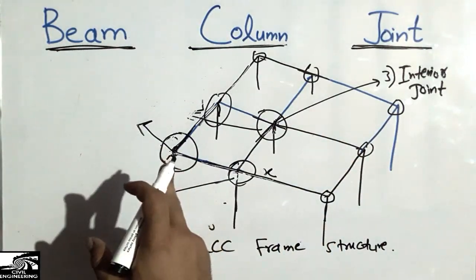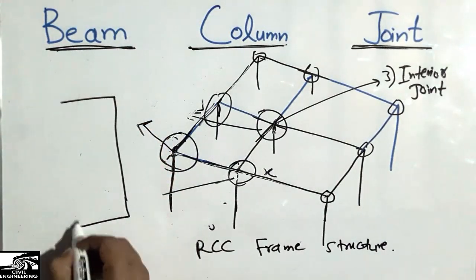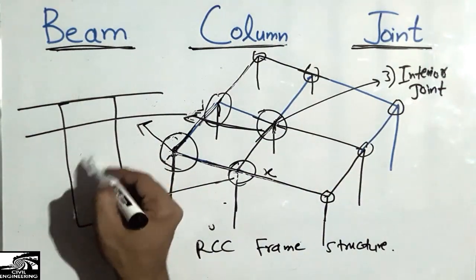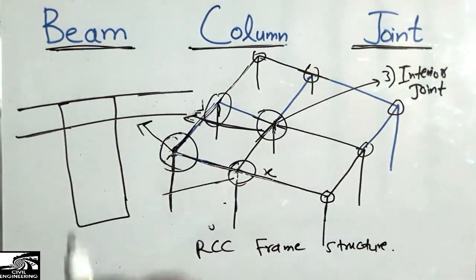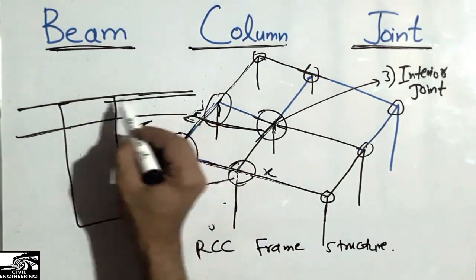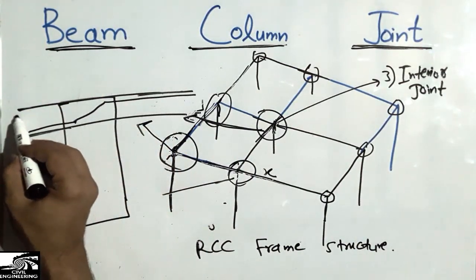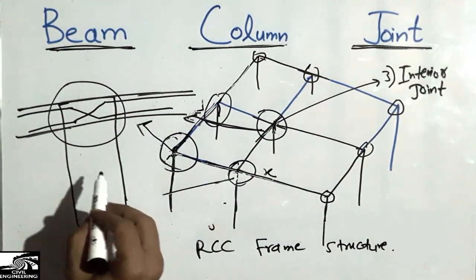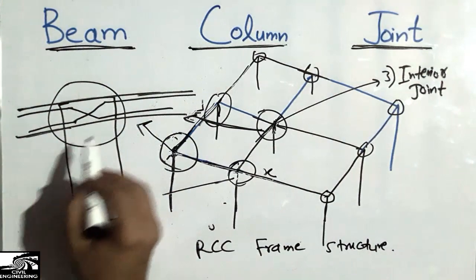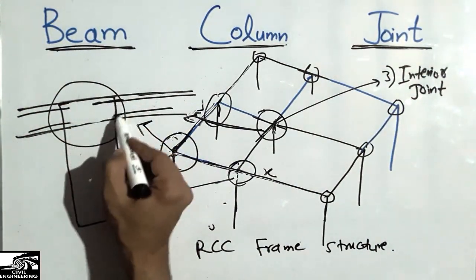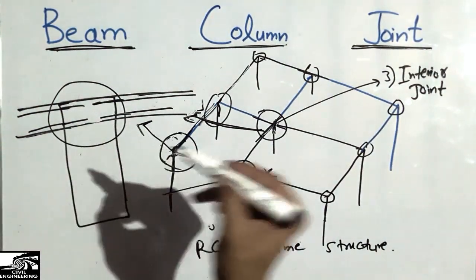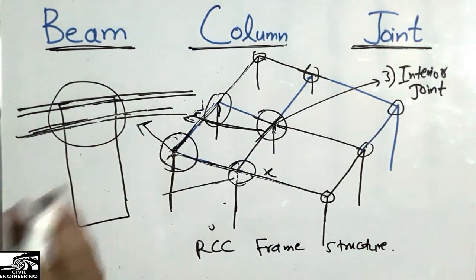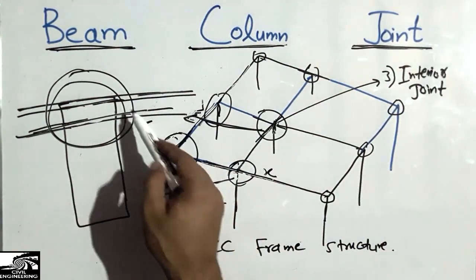The last point concerns interior joints. In an interior or central joint, with a beam passing continuously through the column, the beam reinforcement should not be bent or cut at the joint. It is strongly not recommended by the standards. The beam reinforcement should pass straight through the joint without being cut or bent.